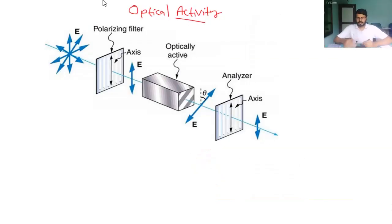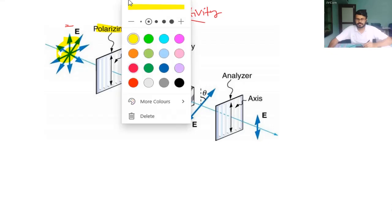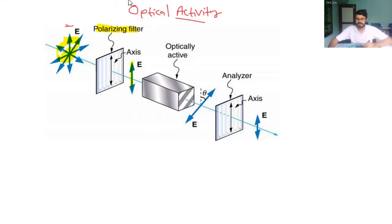Optical activity. Consider an unpolarized beam of light, where the electric field is vibrating in all directions. When that is passed through a polarizing filter, we get a plane polarized light beam, where the electric field is vibrating along the shown direction.